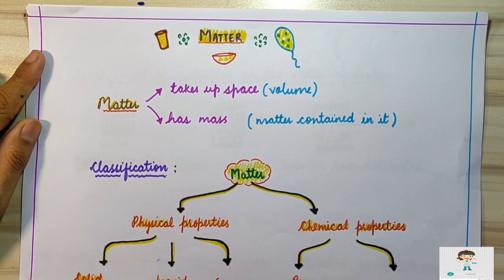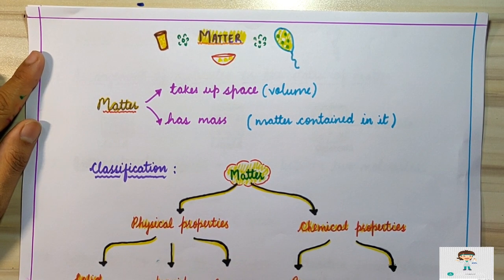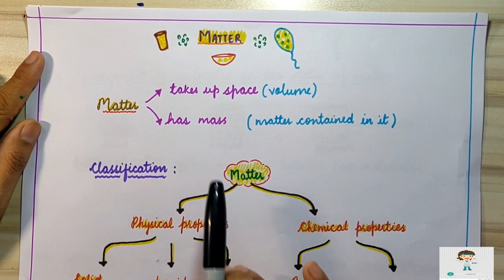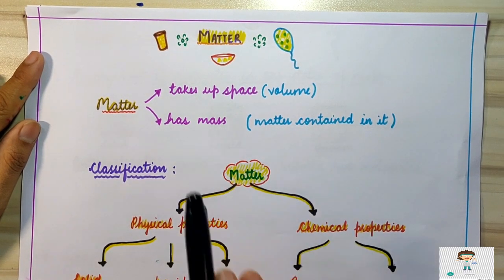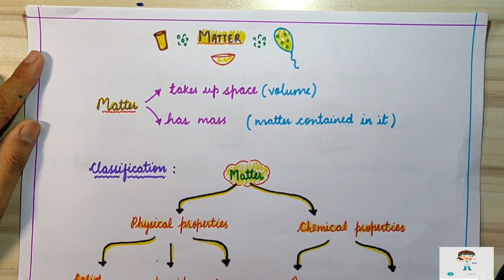So, anything around us which has mass and which occupies space is known as matter. We have so many examples: a book, a pen, table, chair, air around us. Although we cannot see air, it still occupies space and has mass. These are all forms of matter.